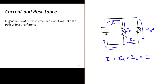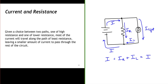In general, most of the current in a circuit will take the path of least resistance. We don't like barriers in our way, so if we see a barrier ahead we try to go around it — same is true of current. So given a choice between a path of high resistance and one of lower resistance, most current will travel along the path of least resistance, leaving a smaller amount to pass through the rest of the circuit.